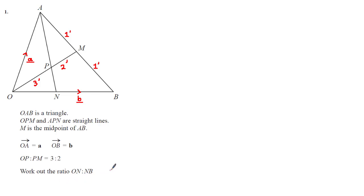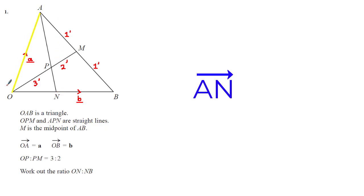The focus vector we're going to choose in this example is the vector AN. The first reason is that the fraction we're after — ON — is determined by the line that divides OB, which happens to be the line AN. The second reason is that one of the vector paths from A to N actually includes the segment ON, which is the fraction of line OB that we're after.